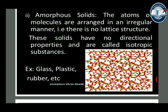Amorphous solids are those in which atoms or molecules are arranged in an irregular manner. There is no lattice structure, and these solids have no directional properties — they are called isotropic substances. Examples of amorphous solids include glass, plastic, and rubber.